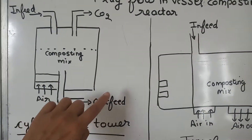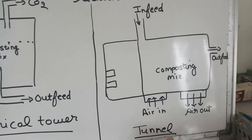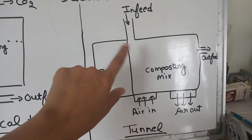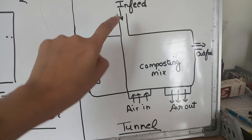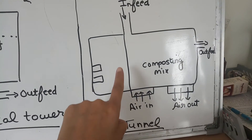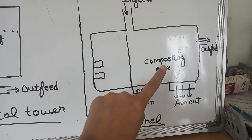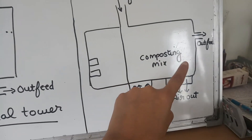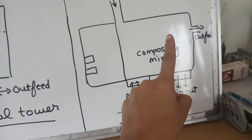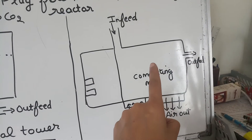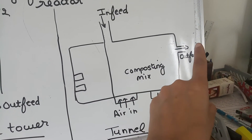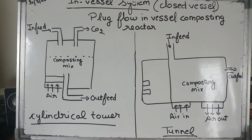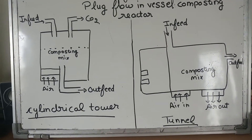In the tunnel system, the shape is rectangular. Air enters here and circulates through the composting mixture. The used air exits, and the out-feed delivers the compost that is ready to use. Those are the two subtypes of the in-vessel plug flow system.